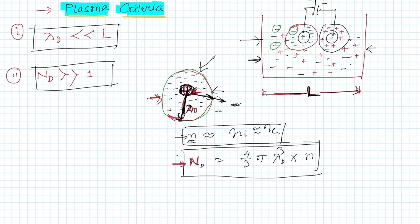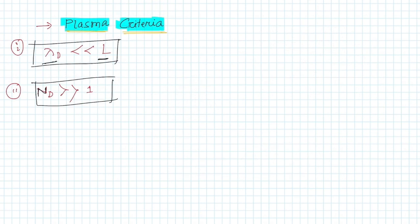When the number of charge particles within the shielding is very very greater than one, then only the ionized gas will be regarded as plasma. Only then is this shielding possible with lambda_D very very less than L.